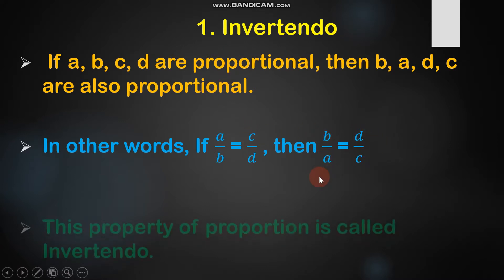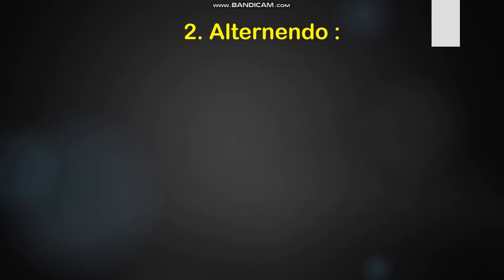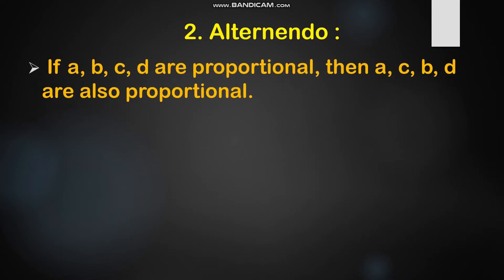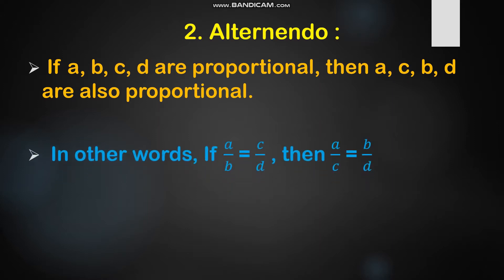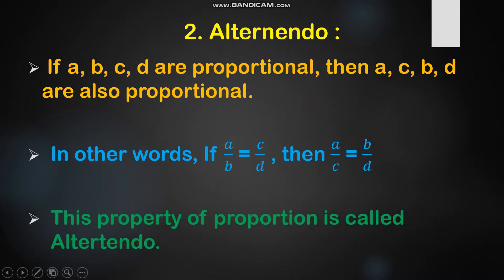This property is called the invertendo property. The next property is alternendo. If A, B, C, D are proportional, then A, C, B, D are also proportional. In other words, if A ratio B is proportional to C ratio D, then A ratio C is proportional to B ratio D. Here, B and C are exchanged. This property is called the alternendo property.